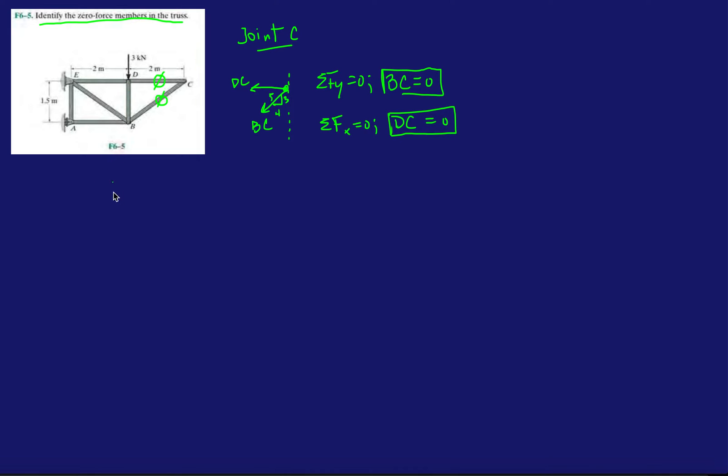Now what happens if I look at D? So, joint, joint D, okay. Okay, so I have this force of 3 kilonewtons, okay. I have nothing to the right side because DC was zero. And I have ED over here and DB over here. Okay.